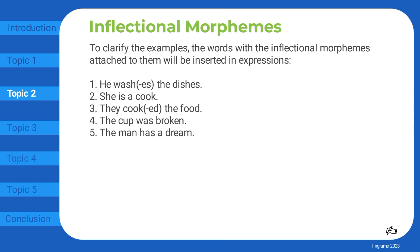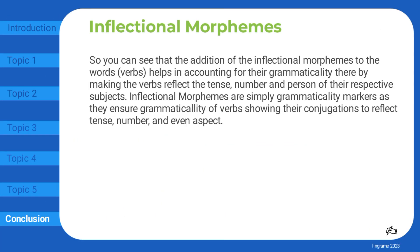So you can see that the addition of inflectional morphemes to verbs helps in accounting for their grammaticality, thereby making the verbs reflect the tense, number, and person of their respective subjects. Inflectional morphemes are simply grammaticality markers, as they ensure grammaticality of verbs showing their conjugations to reflect tense, number, and even aspect. See you soon.